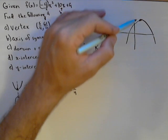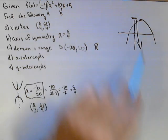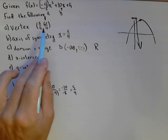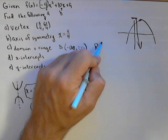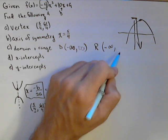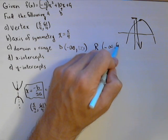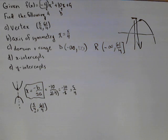So our range is going to be from this y value down. And we found that y value as part of our vertex. So the range is going to be from negative infinity up to the y value of our vertex, which is 61 fourths, and we are going to want to include that.